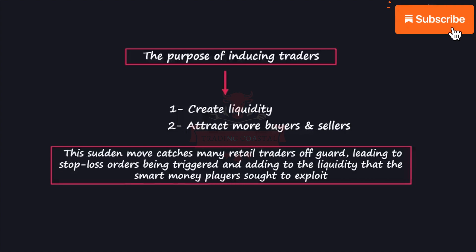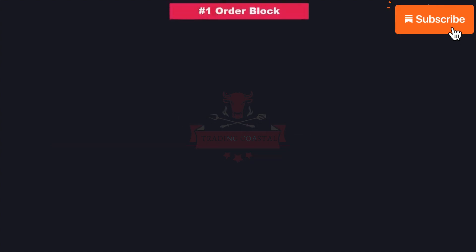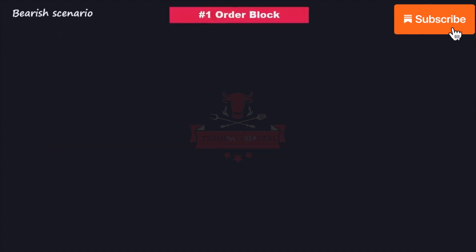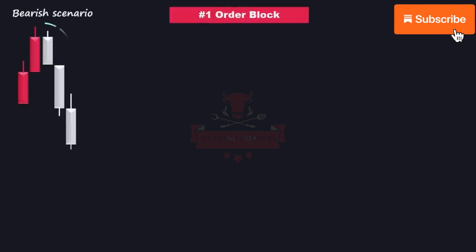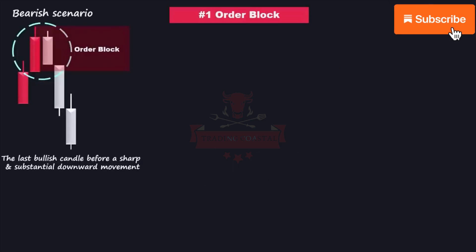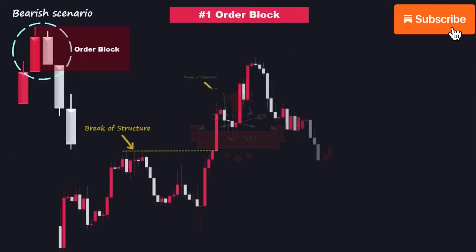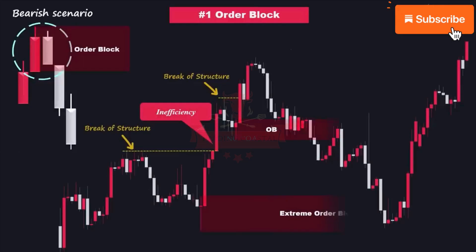Most of the time, inducement zones tend to appear at specific points and zones in the market. These areas often include order blocks — areas where significant orders have been executed or pending orders are clustered — which can act as liquidity zones. Inducement often takes place within order blocks, where market manipulators create false moves or reversals to deceive traders and induce them into taking positions.